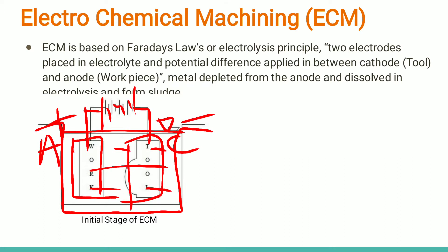The workpiece is positive and the tool is negative. Once the potential difference is created, ions are released from the workpiece surface and from the electrolyte as well. The positive ions released from the workpiece surface and the negative ions released from the electrolyte react with each other and form sludge. This is basically the concept of the electrolysis principle, or Faraday's law.